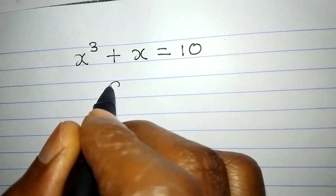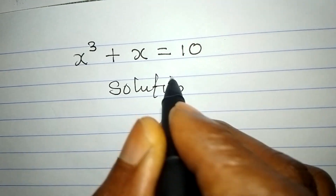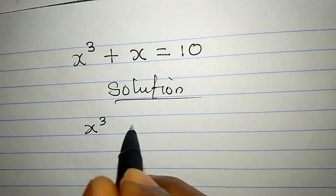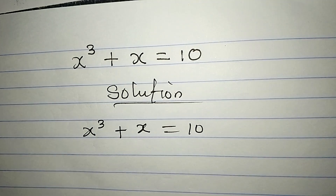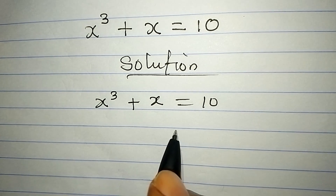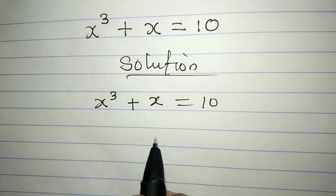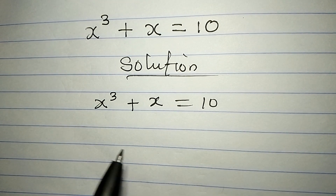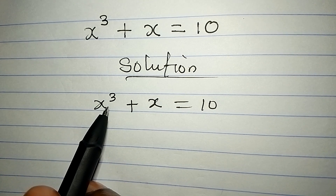Hello everyone, let's provide the complete solution to this problem: x to the power of 3 plus x equals 10. By looking at this problem, you can simply guess what the answer would be. But we are looking for a complete solution, meaning that because we have the power of 3, we are expected to have 3 solutions.